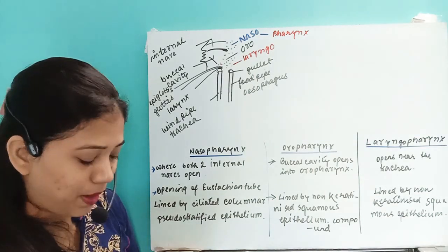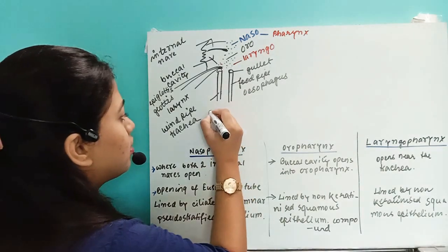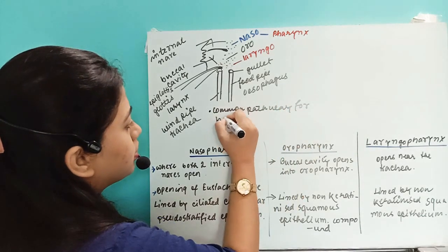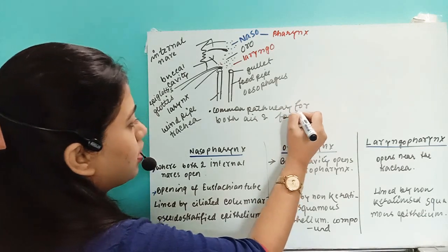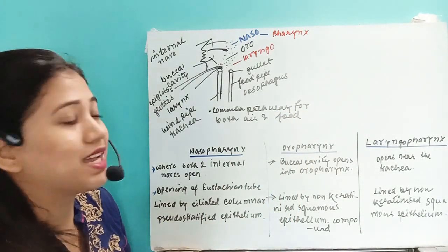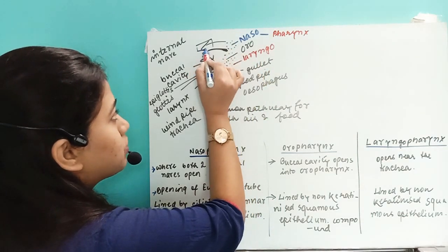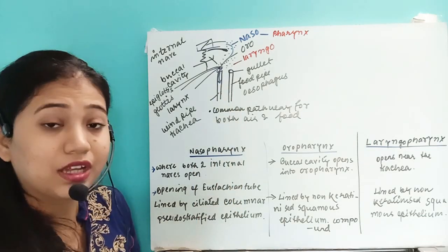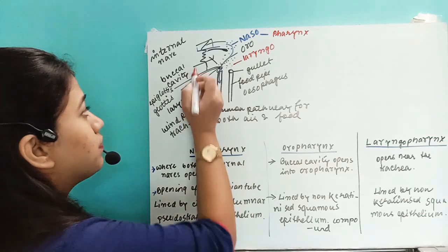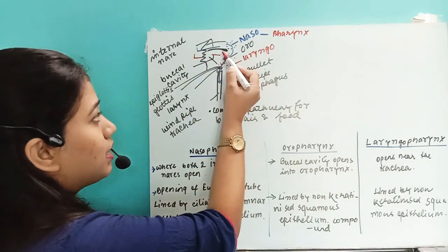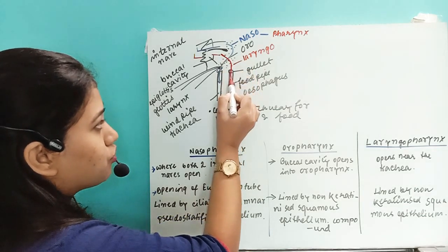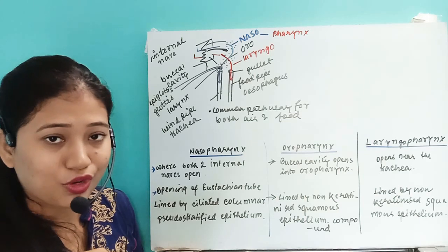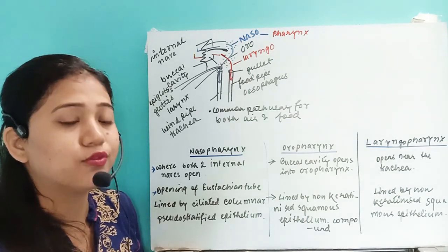The pharynx region is the common pathway for both food and air. Air passes from the external nare to the internal nare, then through the nasopharynx and laryngopharynx, and enters the windpipe. Food is taken in through the mouth, goes to the buccal cavity, then via the oropharynx it enters the foodpipe. Both food and air cross the same pathway in the pharynx region.